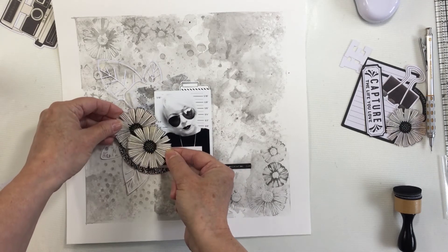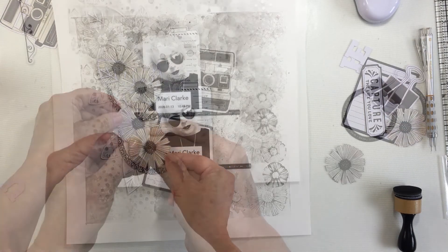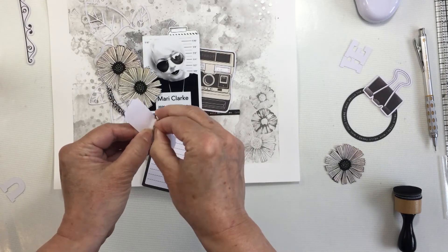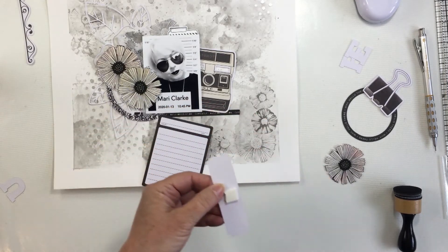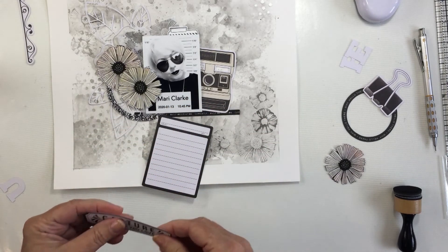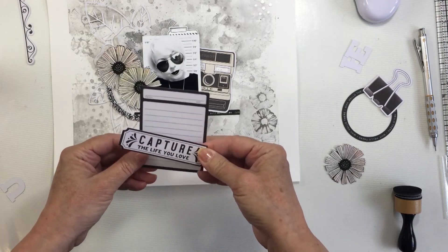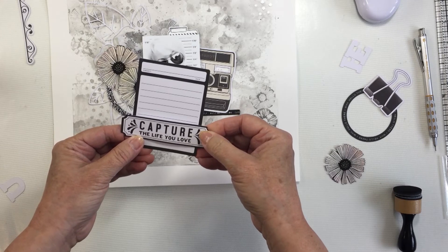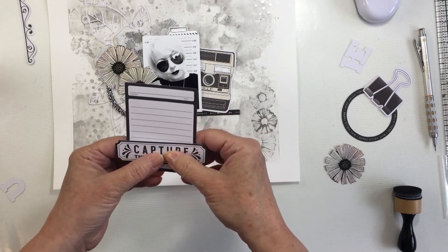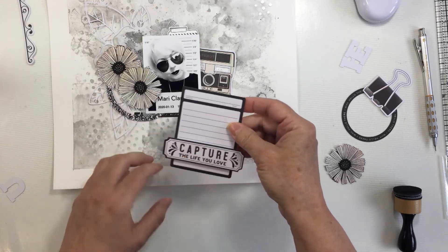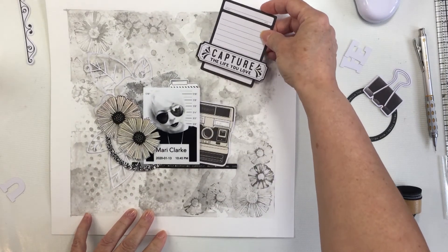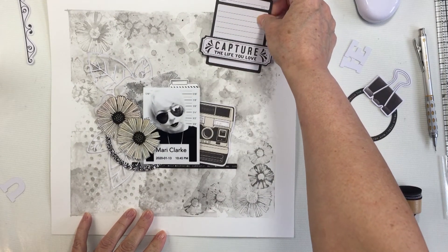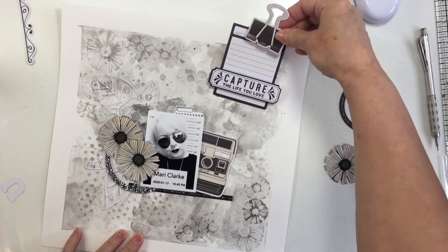Now I'm going to show you these are the fussy cut florals from the gallery paper. I'm going to use I think five flowers in total. I'm going to layer up on top of the journaling card here with another little die cut piece that says capture, or capture the life you love I guess is what it says in its entirety. I'm going to pop that up on some foam adhesive and add that up to the top.